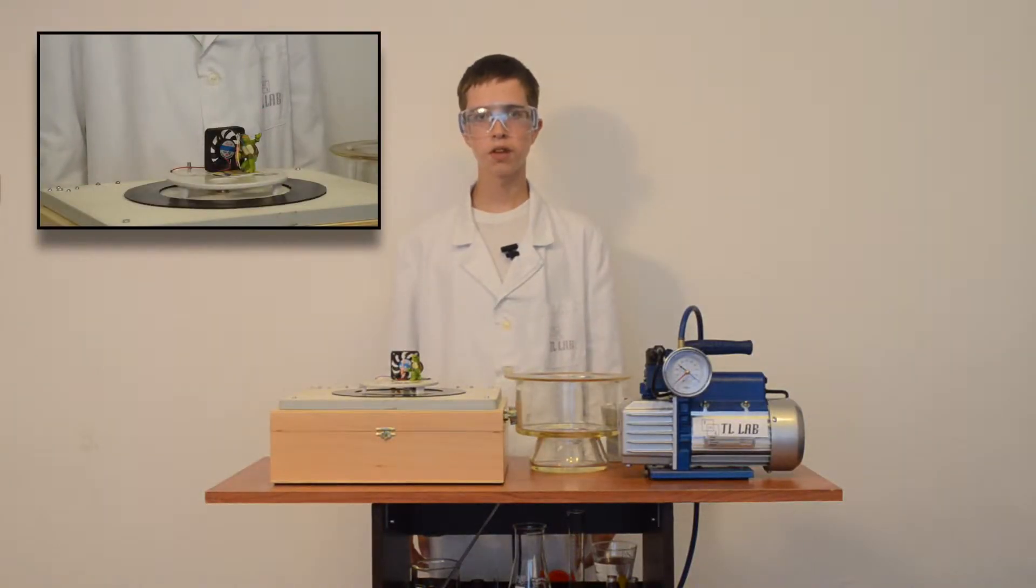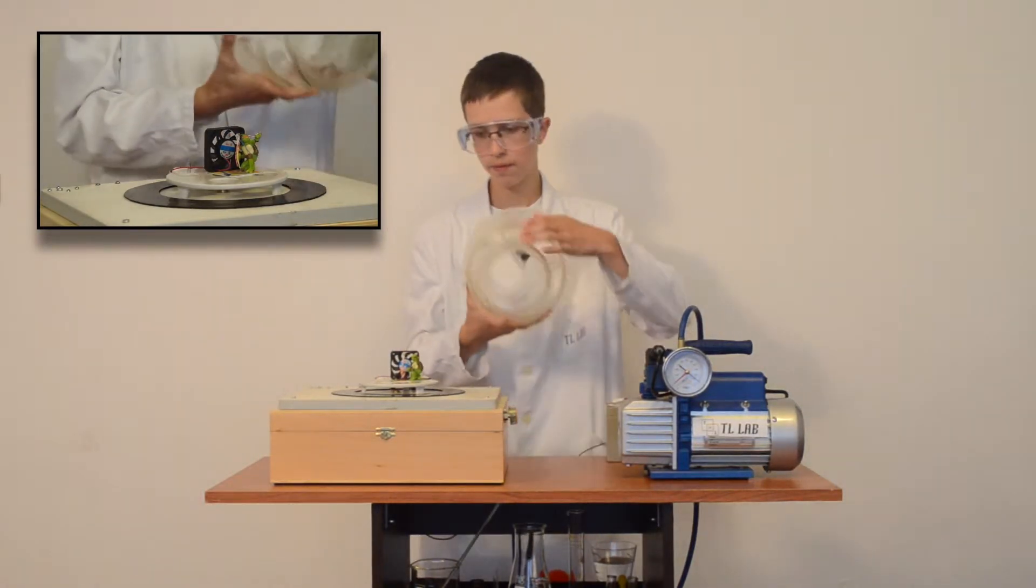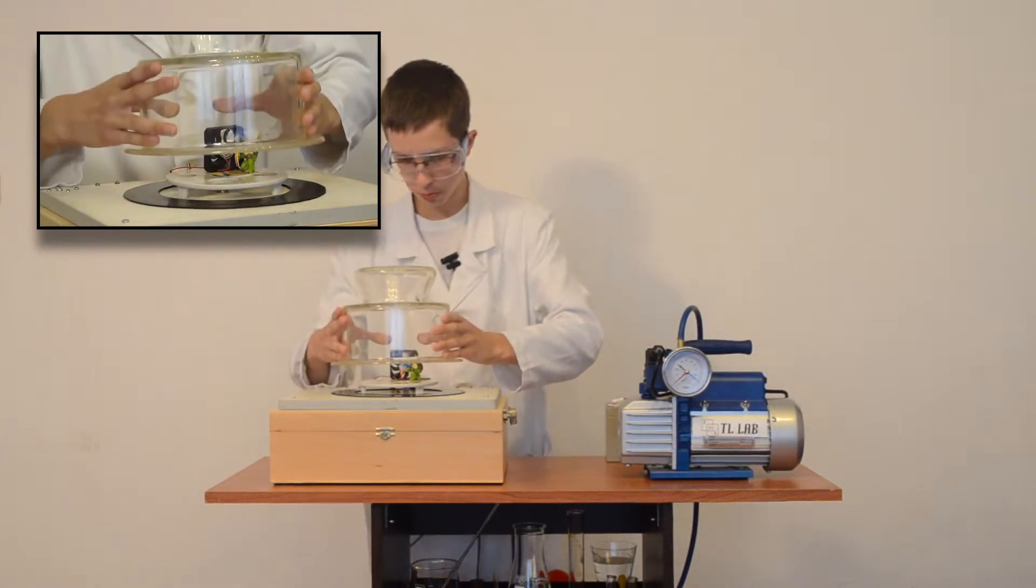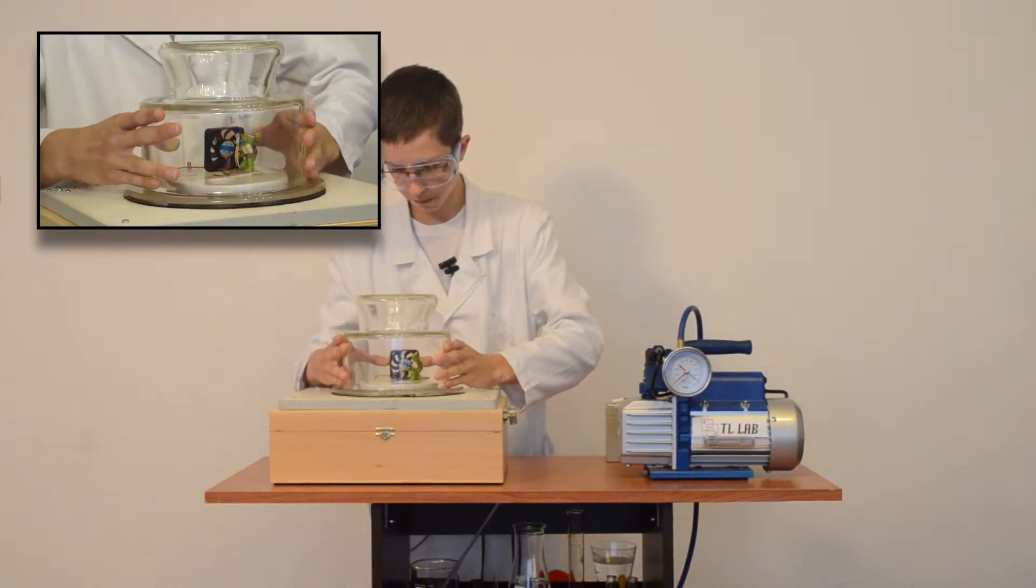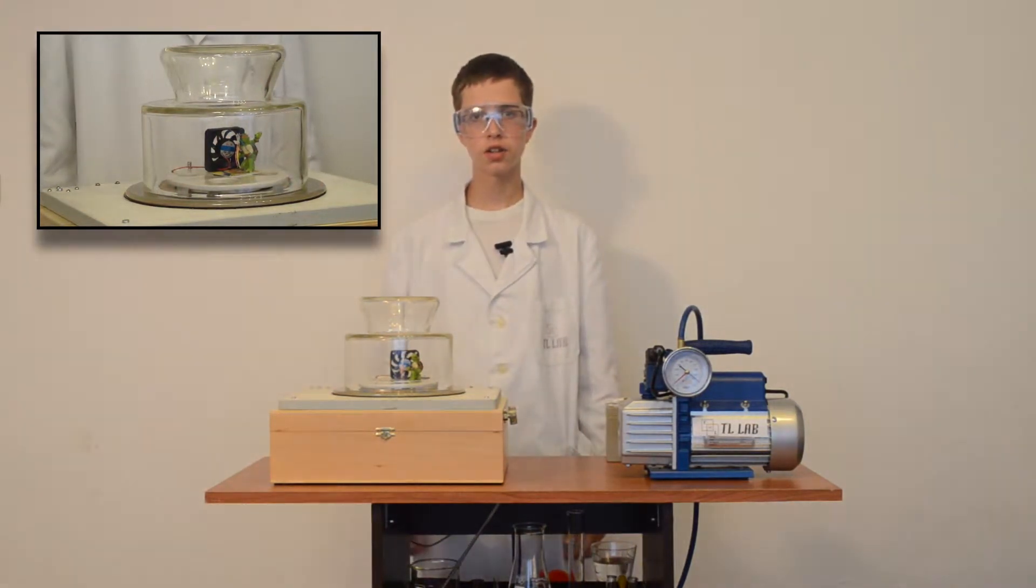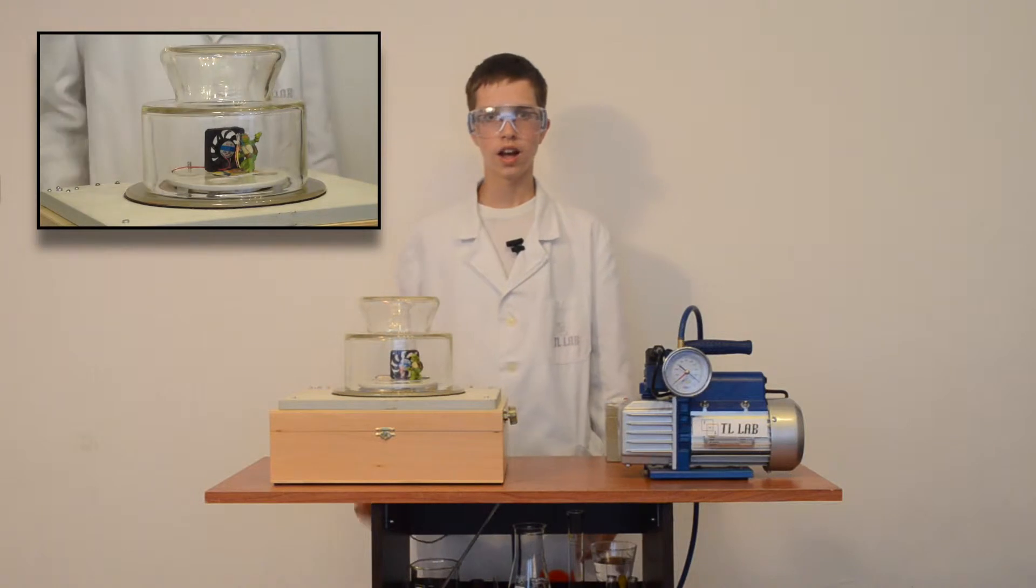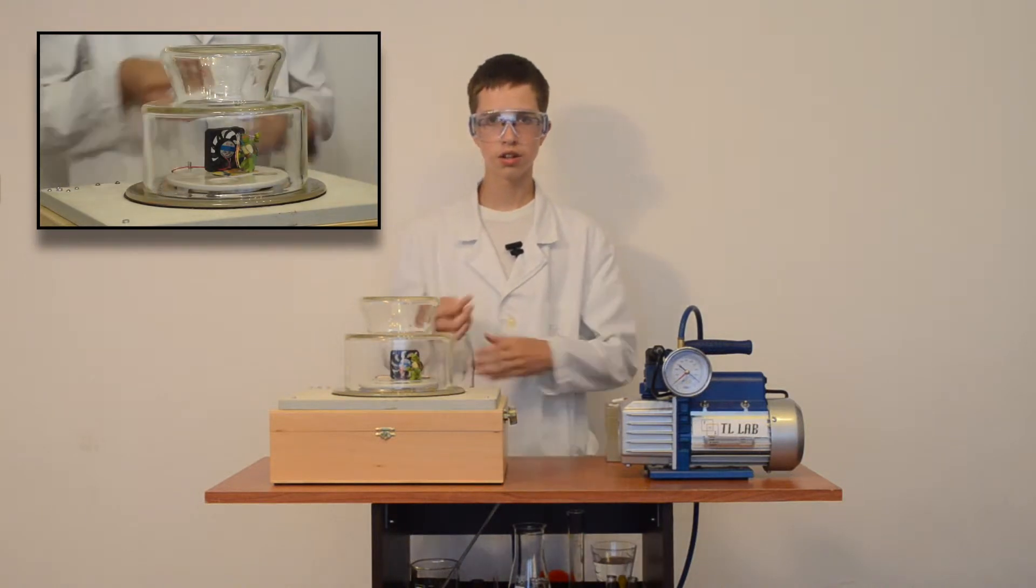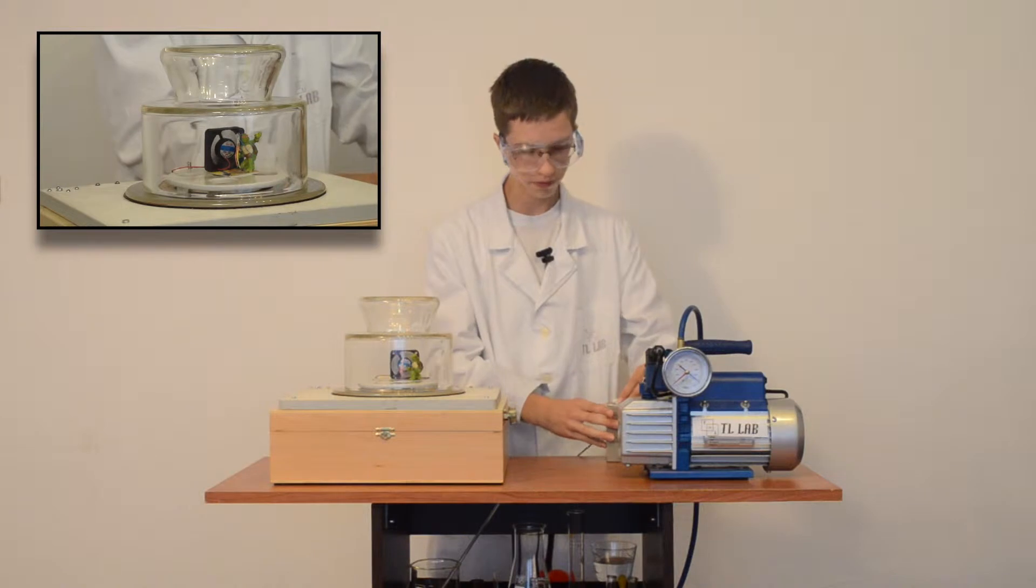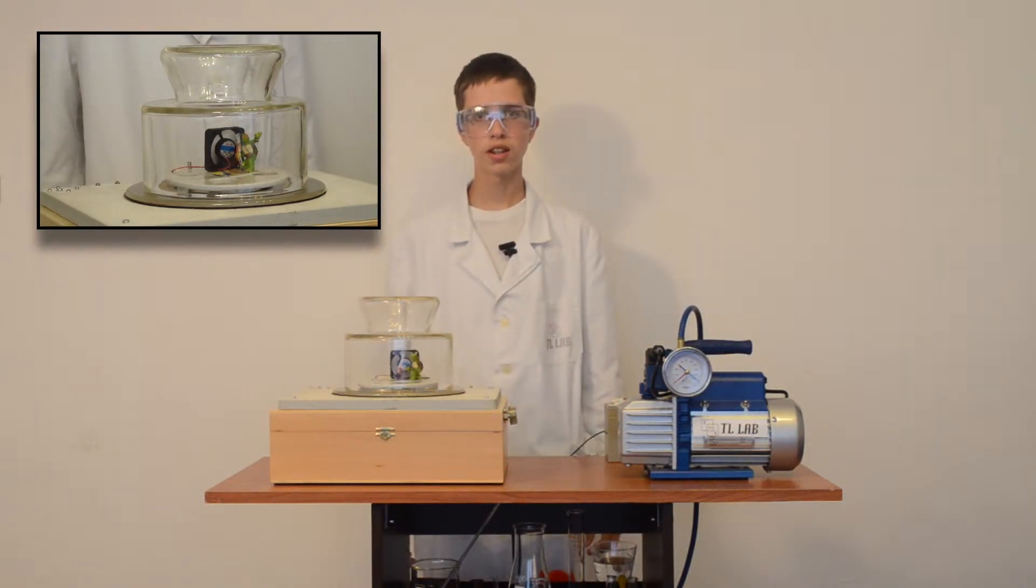Now you will see an example of air circulation. In this example we will use a ventilator. A ventilator is a device which with its propeller rotation blows the air. Here we have a ventilator and a flag. I connected this ventilator to an accumulator. Now you can see how it blows.